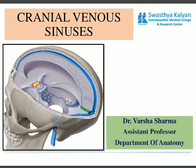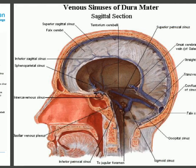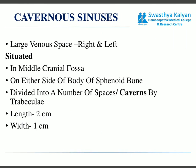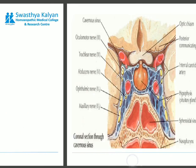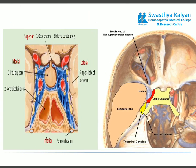Good morning students. Today we will discuss the remaining part related to the anatomy of the cavernous sinus. In the previous lecture we discussed the general introduction of the cranial venous sinuses, the types of cranial venous sinuses, and then we started with the cavernous sinus — we had discussed the location and extension of the cavernous sinus. Today we will talk about the remaining part.